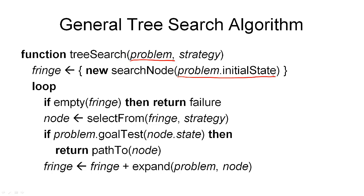The algorithm starts by creating a new search node from the initial state of the search problem, and this is stored in a set of nodes called the fringe — often also called the set of open nodes as opposed to the set of closed nodes. These are all the nodes in our search tree that we have not yet explored. Initially, we have not explored the initial state, and that is the only state we know about.